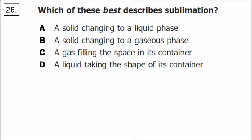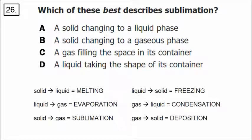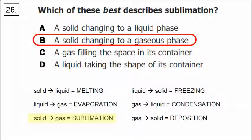In number 26, we should know the name sublimation — a phase change. The six types of phase changes are: solid to liquid (melting), its opposite (freezing); liquid to gas (evaporation or boiling), its opposite (condensation); solid to gas (sublimation), its opposite (deposition). If we're going from a solid to a gas, the correct answer is B, sublimation.